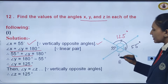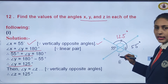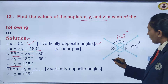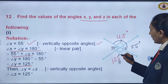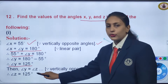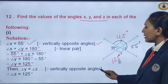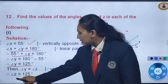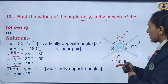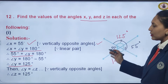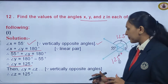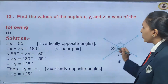Now, angle y and angle z are vertically opposite angles. That means if angle y is 125 degrees, angle z will also be 125 degrees. So angle y equals angle z because they are vertically opposite angles, therefore angle z is also 125 degrees. Step by step, using linear pairs and vertically opposite angles, we get our answers. Let us go to question number 2.